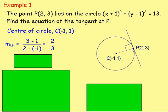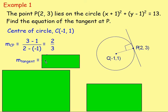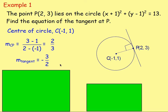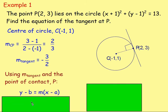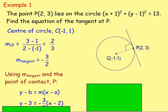If you're wanting the gradient of the tangent, it's a perpendicular gradient — so you flip it upside down and change the sign. This is positive, so the gradient of the tangent will be negative 3 over 2. From there, you would use the gradient of the tangent, which is negative 3 over 2, and the point of contact (2, 3), and sub that into the equation of a straight line: y minus b equals m bracket x minus a. So you'd have y minus 3 equals negative 3 over 2 bracket (x minus 2).